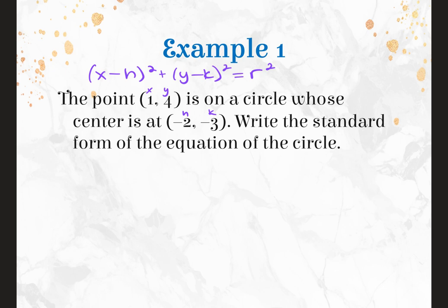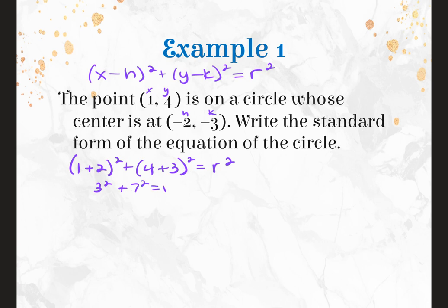We plug it in: (1 minus negative 2) squared plus (4 minus negative 3) squared equals R squared. That gives us 3 squared plus 7 squared equals R squared, so 9 plus 49 equals R squared, and R squared is 58. Because the equation uses R squared, we can just leave it as R squared — no need to square root.